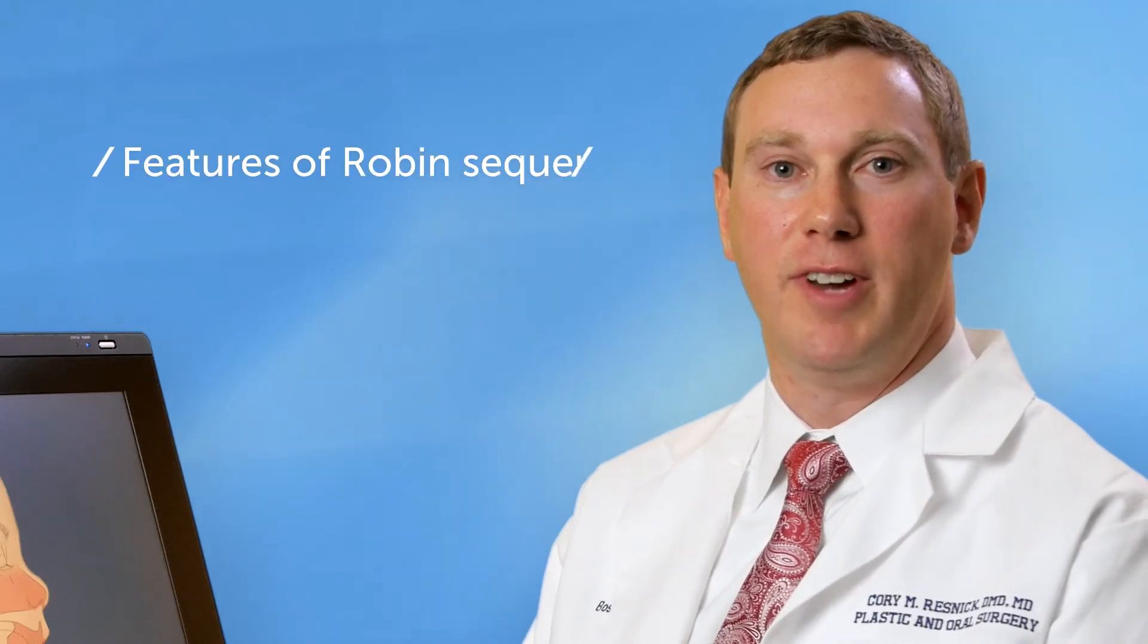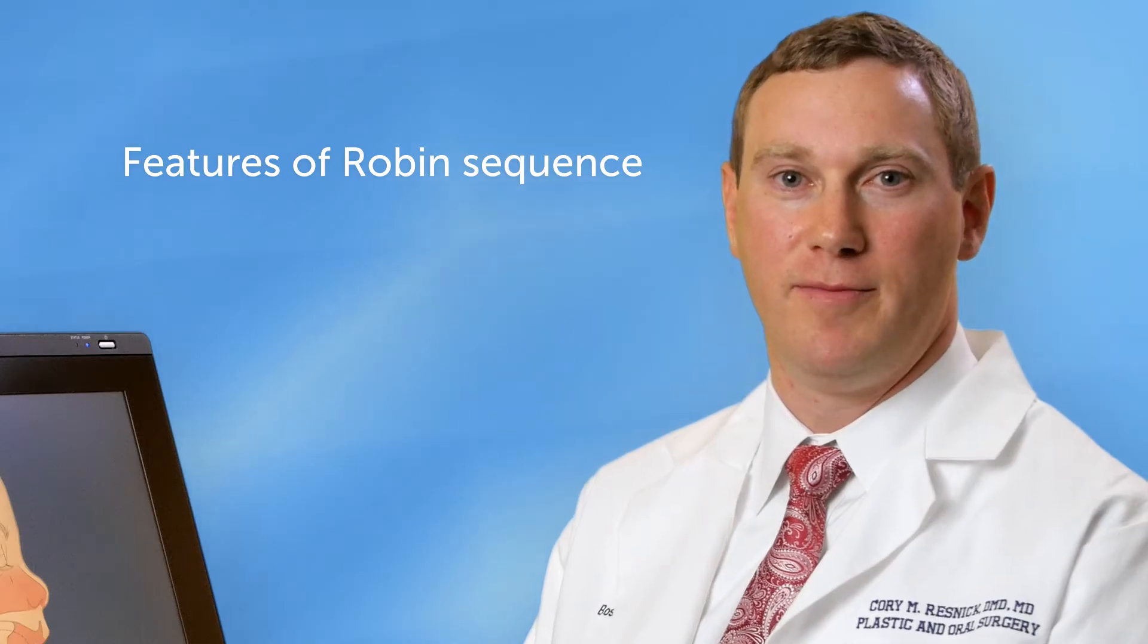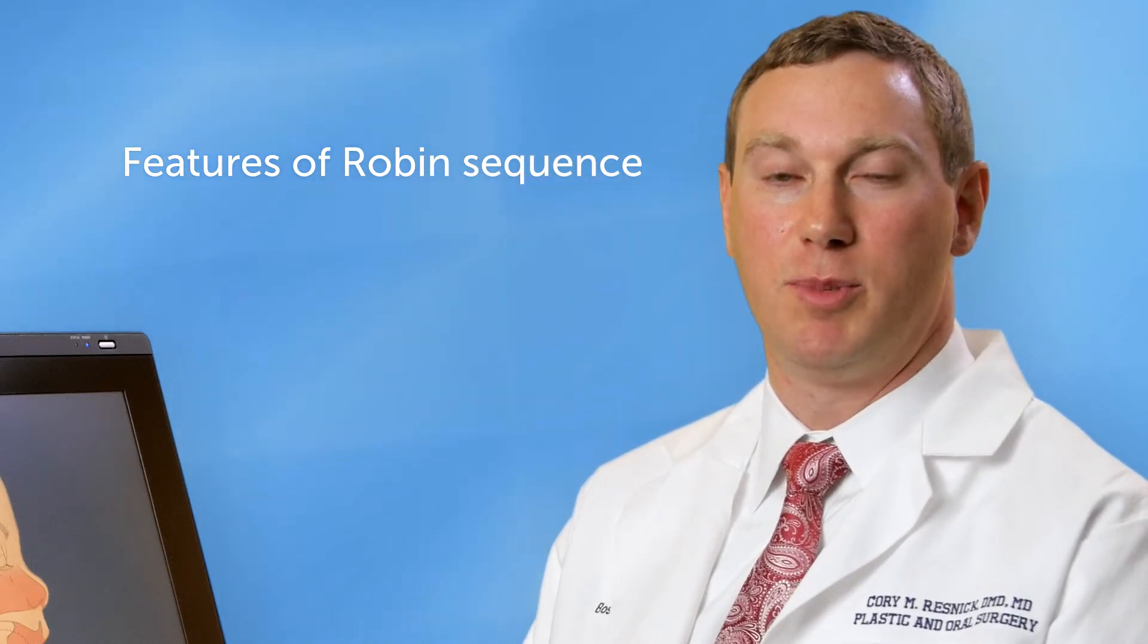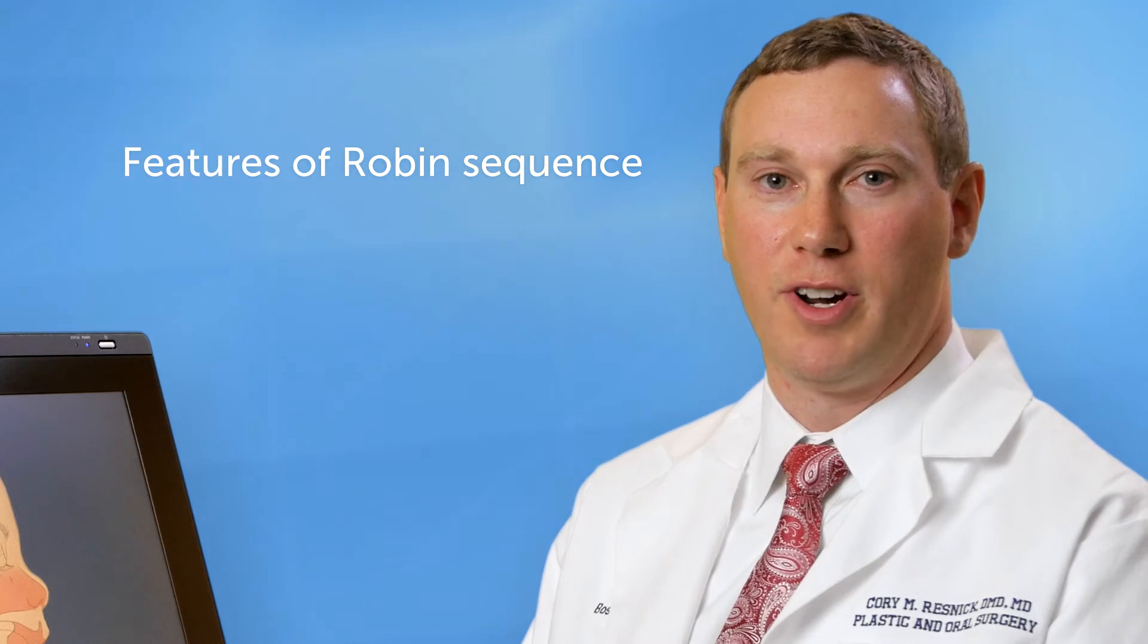Robins Sequence is a combination of three facial differences that are present at birth. At seven to ten weeks into a typical pregnancy, the lower jaw or the mandible grows very rapidly.